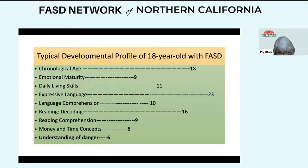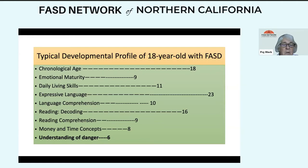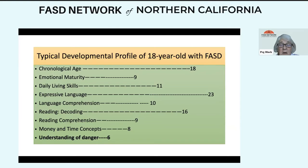The typical developmental profile in FASD illustrates how uneven development can be — a characteristic of fetal alcohol spectrum disorder. For example, chronological age may be 18, expressive language out at 23, language comprehension at age 10, money and time concepts at age 8, emotional maturity at age 9, and understanding of danger at age 6. Psychologists: if you see a scatter of skills, that is not an error — that is the profile of the disability.